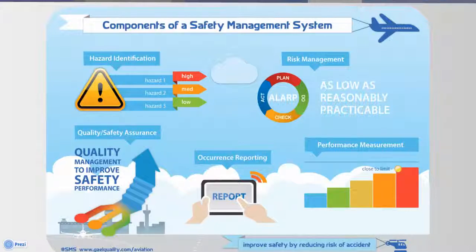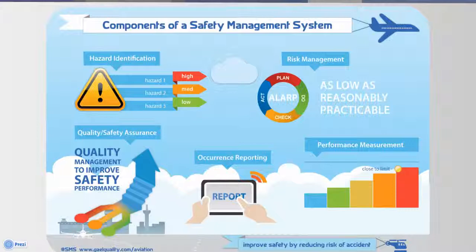If we consider the components of an SMS focused on throughout this series, it is highly likely that many systems will be utilised to manage each of these components. For example, the management of audits and documents may not be handled in the same system as reporting, investigation and analysis. However, the results of audit and document management may contribute to the investigation and analysis aspects of the SMS. If that is the case, it is not an ideal situation, so the solution is that an integrated approach to quality, safety and risk management should be established.